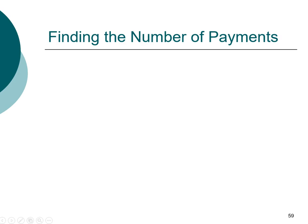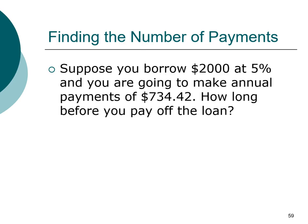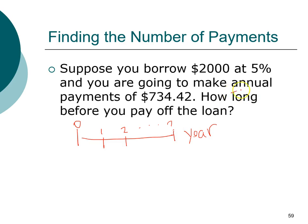Now let's take a look at another example. In this case, we're going to look for the number of payments. Let's say you have borrowed $2,000 at 5% and you're going to make annual payments of $734. The question asks how long it will take before you pay off this loan. We don't know the duration — so the question mark goes there. The payment frequency is annually, so we borrow $2,000 as the present value, and we make that payment a negative outflow.